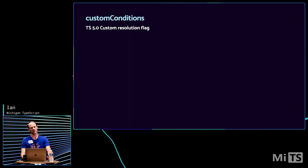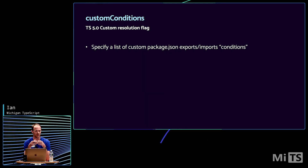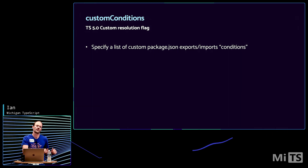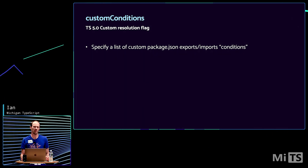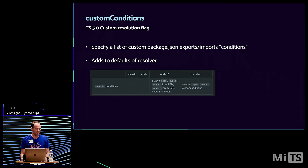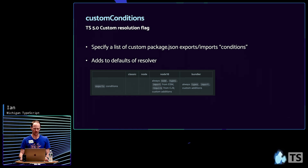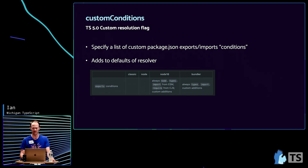And lastly, customConditions. This is also related to exports and imports in your package.json. In those, you can specify a list of conditions. You can say, if this file gets required using CommonJS, supply this CommonJS file, or if you're using import, give you this ESM file. There are also other conditions — there's 'node' that is on by default for Node16. You can also have custom ones like 'browser', 'web worker', or other various custom exports or imports conditions. You can add them using this flag with an array, and it'll add those on to whatever your module resolution mode supplies by default.